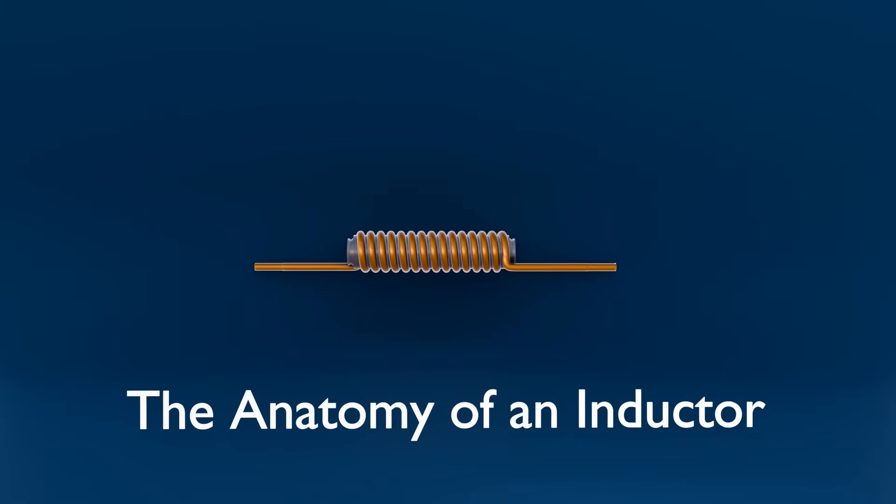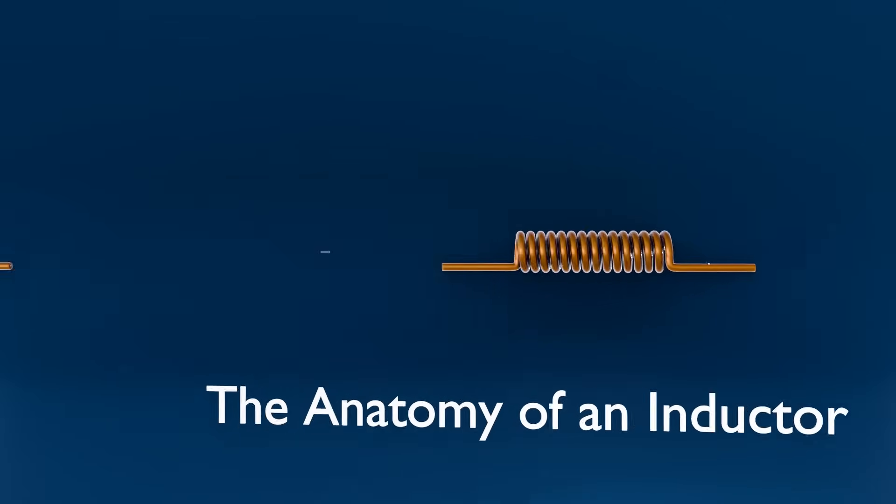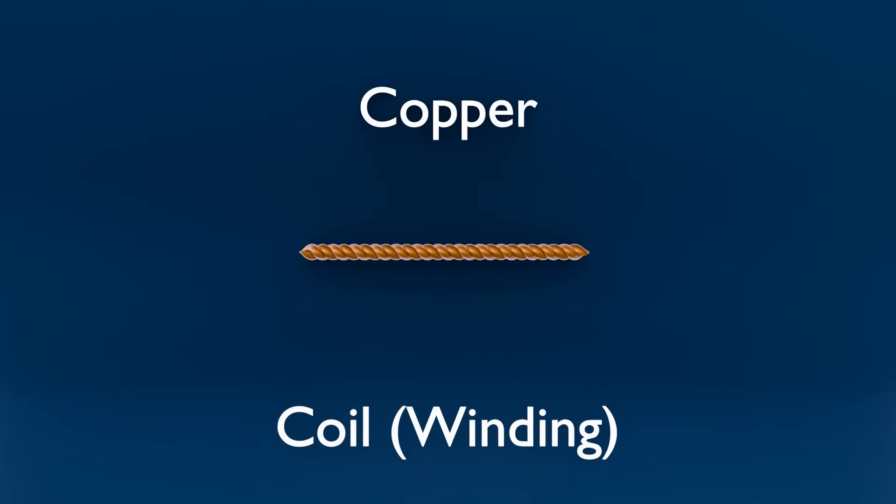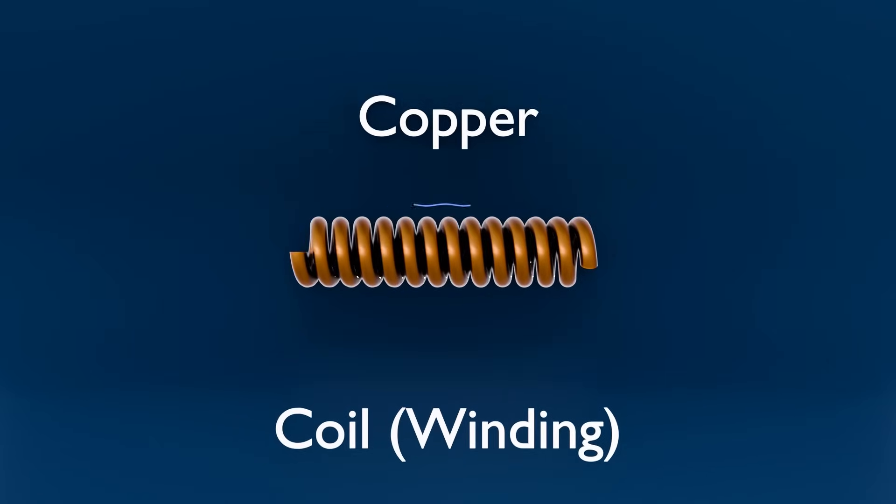The anatomy of an inductor. Let's break down the basic parts of an inductor. Coil winding. The wire, often copper, wrapped in multiple turns to increase inductance.